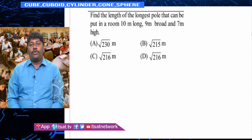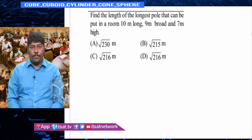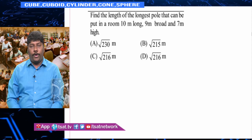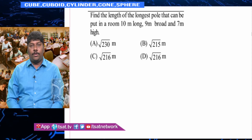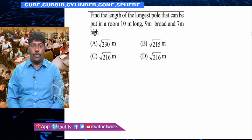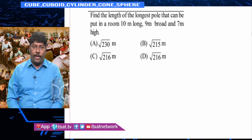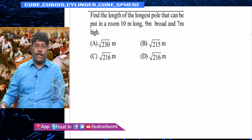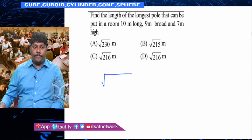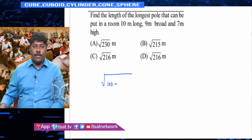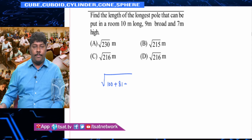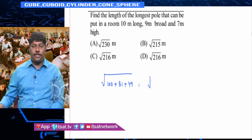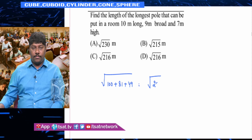Find the length of the longest pole that can be put in a room 10 m long, 9 m broad, and 7 m high. The longest length is the diagonal of the cuboid: √(l² + b² + h²) = √(100 + 81 + 49) = √230 metres.